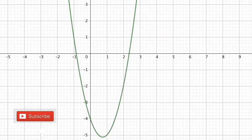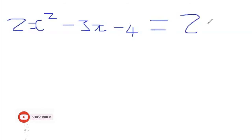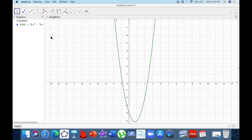We can be asked questions. For example, given the original curve, find x when 2x squared minus 3x minus 4 equals 2. What we do is look at what's on the right side of the equal sign, which is 2, and draw a horizontal line y equals 2 through the y-axis. Where this line cuts the graph, we read off the x values, and that gives us the solution for 2x squared minus 3x minus 4 equals 2.